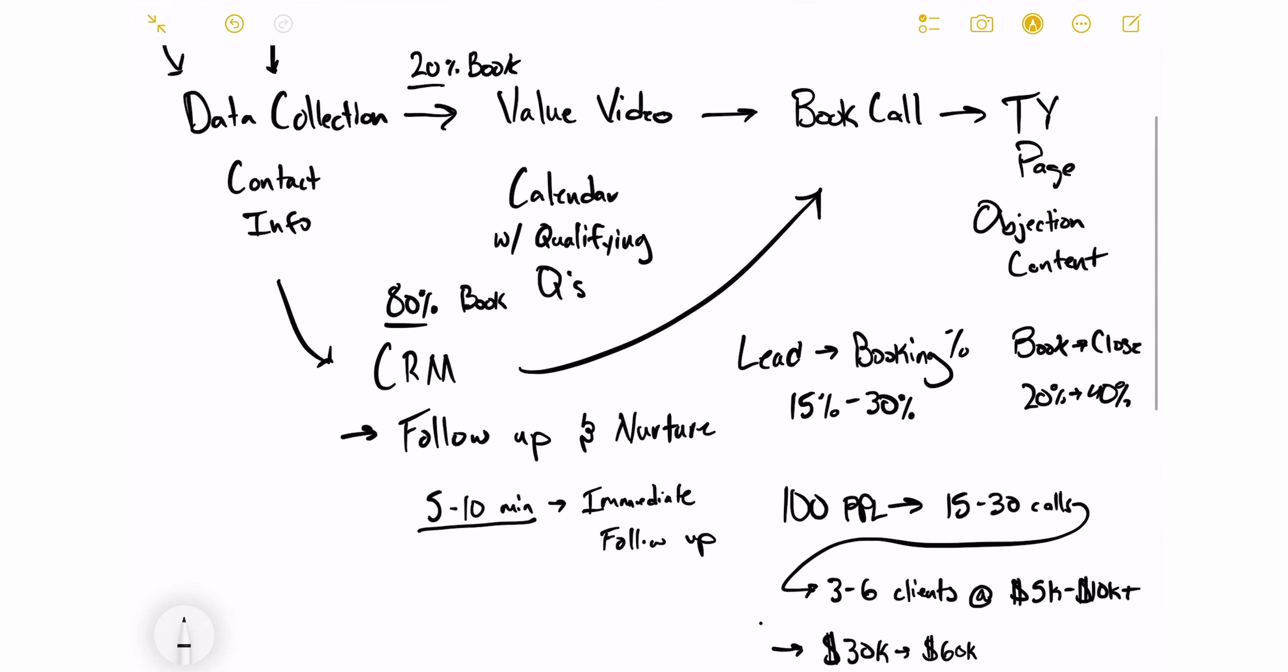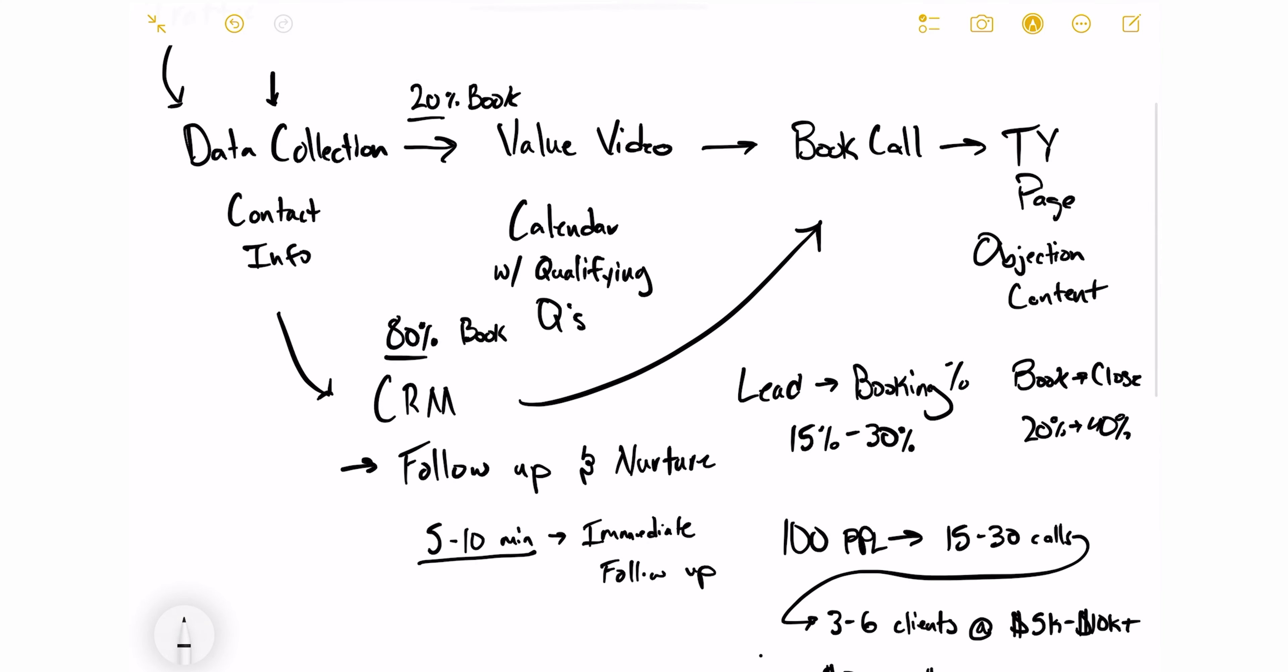Let's break down some numbers here. So let's say, on average, our clients are seeing a 15 to 30% lead to booking percentage. Now, what that means is, I'll break that down in a second, but if a hundred people come in, that's turning into 15 to 30 qualified calls. If you have a hundred people come into the system and then from there book to close. So people who are booking to closing is about 20 to 40% depending on the price of the offer. And so that means a hundred people come in 15 to 30 of those people book calls that turns into three to six clients.